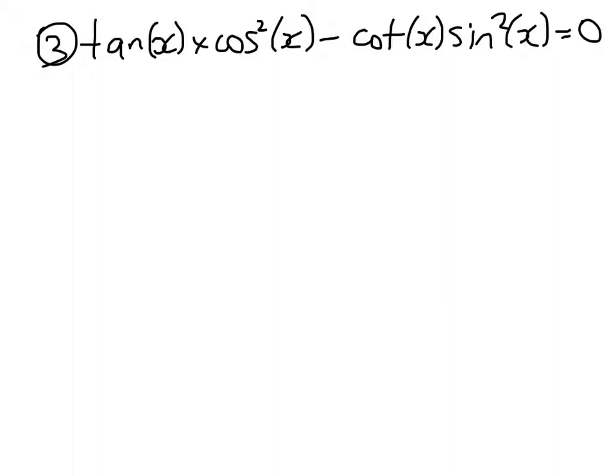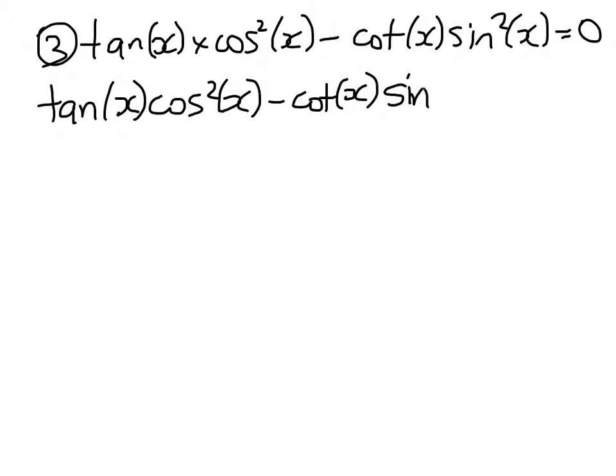So unfortunately I am going to make you write that first left hand side line out all over again. So here we go. So we get tan(x)cos squared(x) minus cot(x). Probably should be cot(x) for cotan but I just say cot.